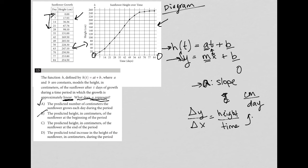Choice C says the predicted height in centimeters of the sunflower at the end of the period. Well, no, that's not true, because that's over here. Our a value is a slope, not an actual point on the graph, so C is out.